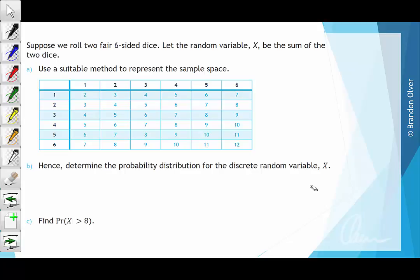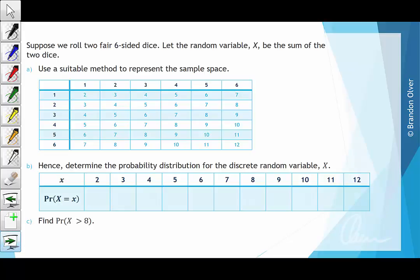Part b asks us to determine the probability distribution for the discrete random variable x. We can set this up with all the possible outcomes: 2, 3, 4, 5, 6, 7, 8, 9, 10, 11, and 12. We'll work out their associated probabilities in a table where the first row has all the possible outcomes labeled as x, and the second row is the probability associated with each outcome.